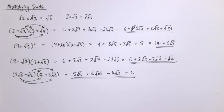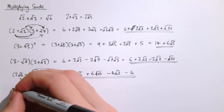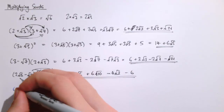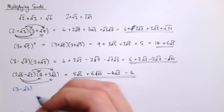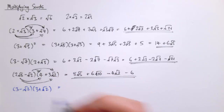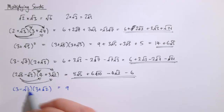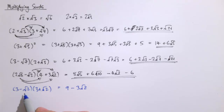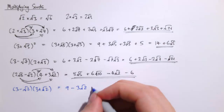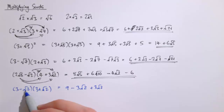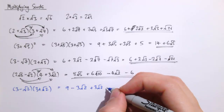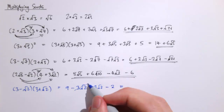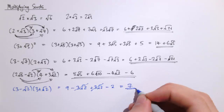There's a special case that doesn't look very different at first but turns out to be really important. If we have 3 minus root 2 times 3 plus root 2: we get 3 times 3 is 9, then minus 3 root 2, then plus 3 root 2, and finally minus root 2 times root 2 which is minus 2. The minus 3 root 2 and plus 3 root 2 cancel out, and we're just left with 9 minus 2, which is 7.